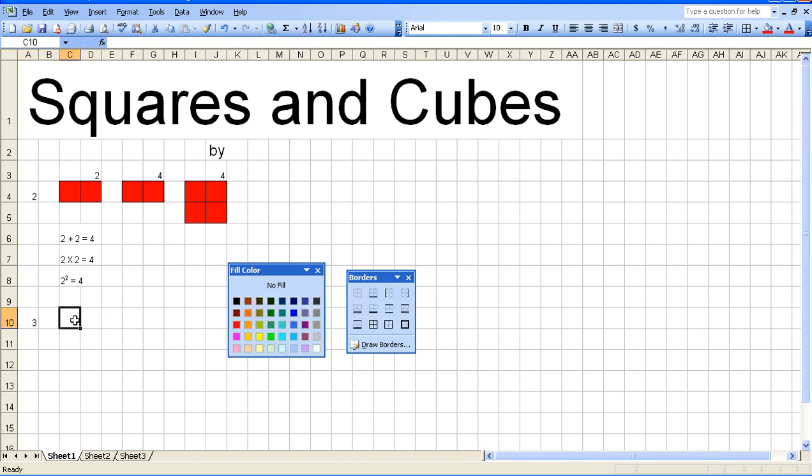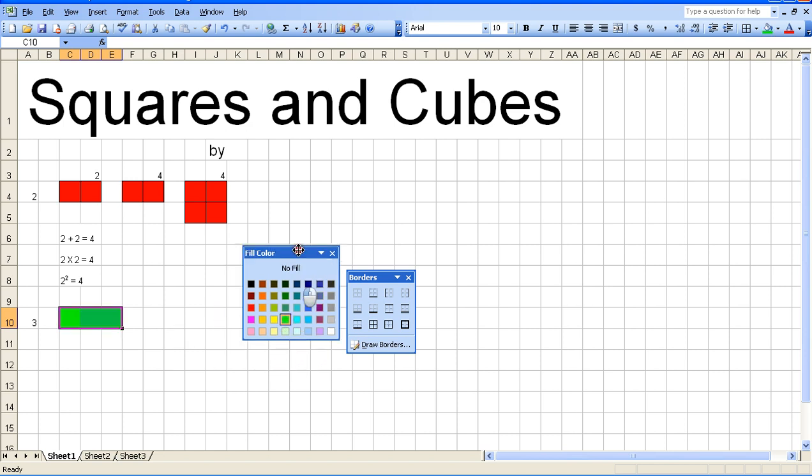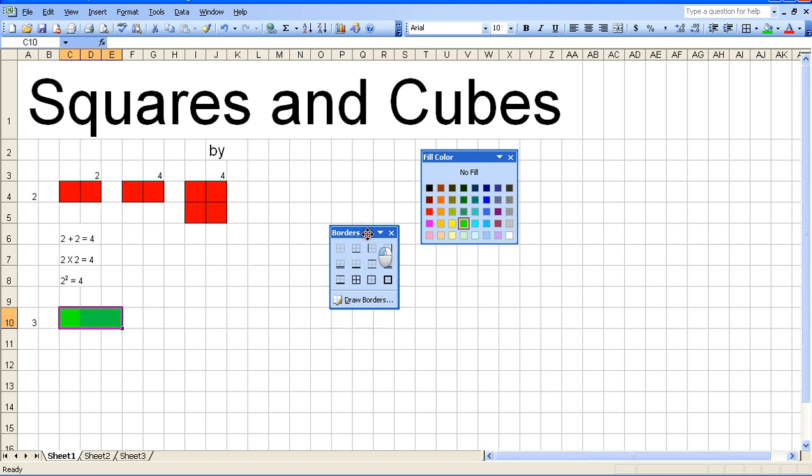So you're going to start in cell C10, and since it's 3's, we're going to highlight 3 cells, and 3's are green. I'm going to move this up a little so that it's not in my way.